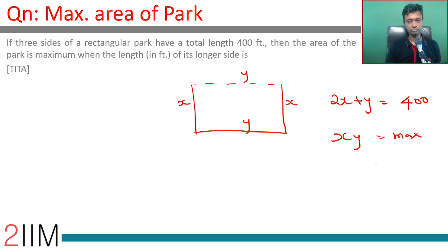Now y equals 400 minus 2x, so x times 400 minus 2x should be maximum, or x times 200 minus x should be maximum.